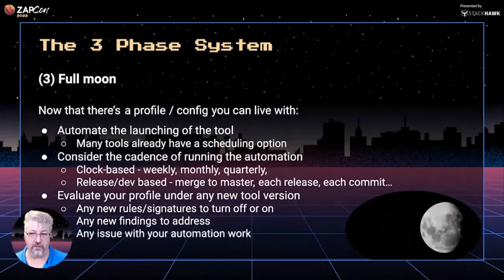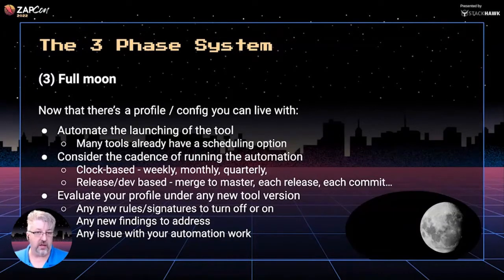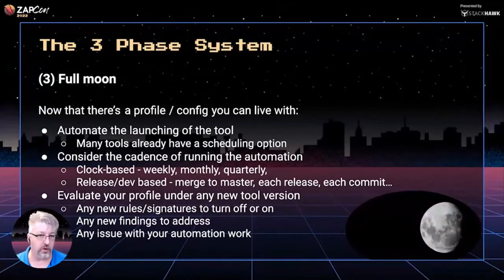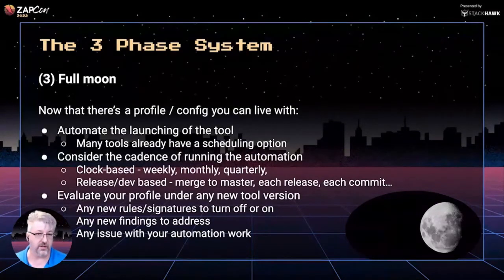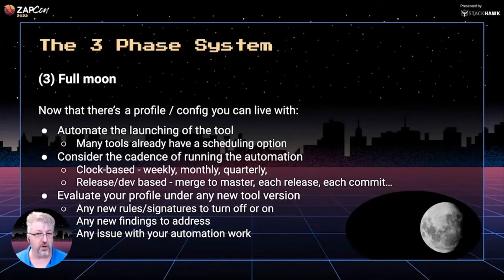In your final phase — the full moon — you've got a solid profile, you're happy with it, you've tuned the scanner as much as you can, and you have reasonable results. Now it's time to truly automate: automate its launching. If you're lucky, your tool has a built-in scheduling option. As you think through timing, there are cadence questions: do you want a clock-based cadence — every week, every month, every quarter — or do you want something based on your release cycle, your SDLC? Do you merge into master and then run a test? Is it every release, every commit? You have a bunch of different hooks you can wire into during development to fire off these scans.